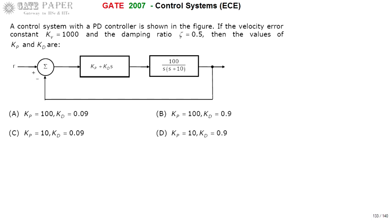We can get these two values by going through the velocity error constant as well as the damping ratio. From the velocity error constant equation we will get one value, and the other value we will get from the damping ratio. Damping ratio is given, but we can find it only from the characteristic equation, which is the denominator of the closed loop transfer function equated to 0. We have to obtain the closed loop transfer function with unity feedback, then compare the zeta value to get the other factor.